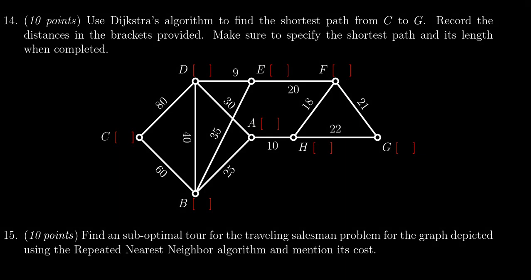In this video we provide the solution to question number 14 for practice exam number one for Math 1030, in which case a weighted graph is provided and we need to use Dijkstra's algorithm to find the shortest path from C to G.